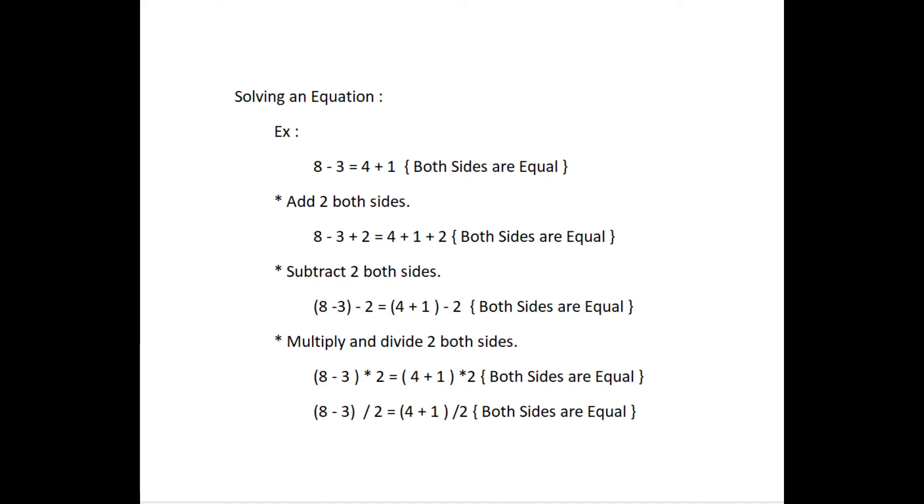Let us now subtract 2 from both sides as a result. 8 minus 3 minus 2 equal to 4 plus 1 minus 2 equal to 3. That is, if we subtract the same number from both sides, it still holds. Similarly, if we multiply or divide both sides of the equality by the same non-zero number, it still holds.